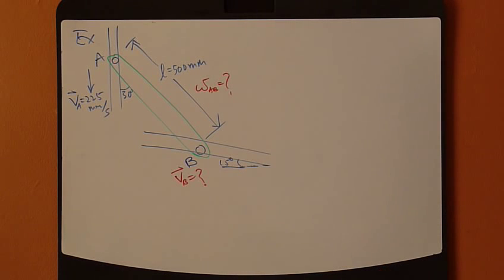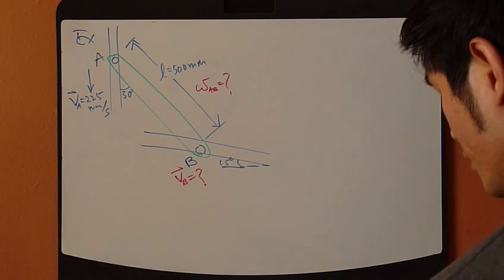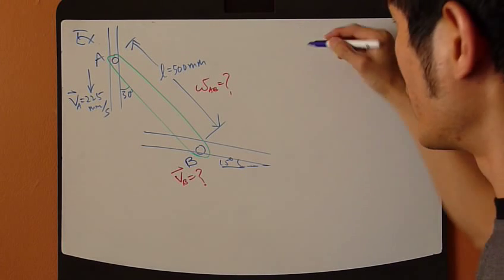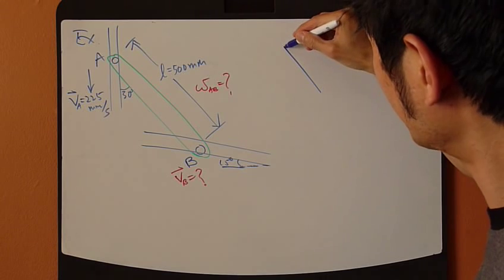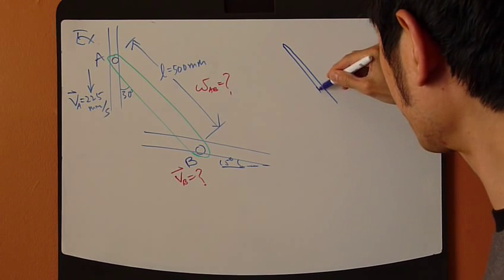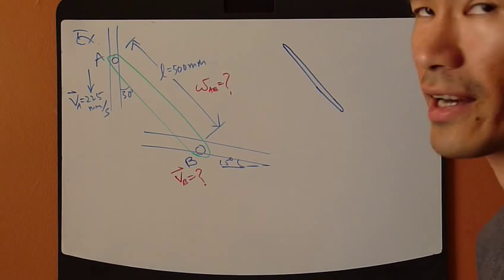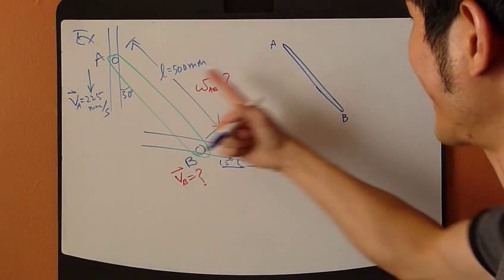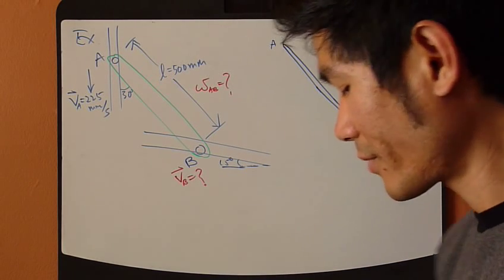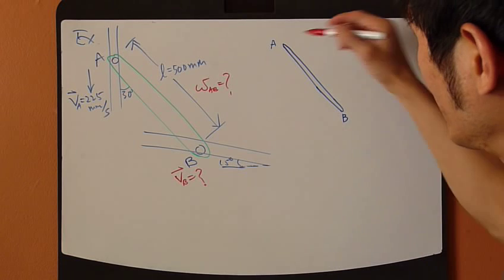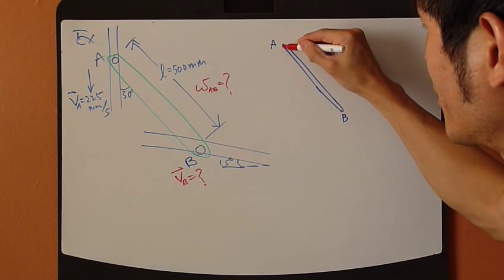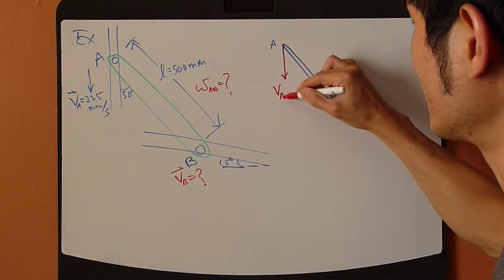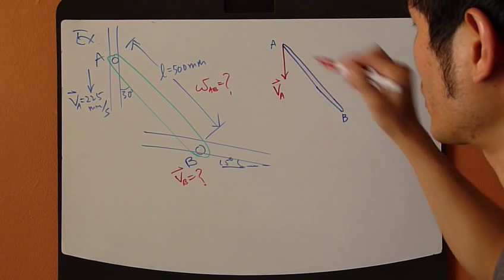I'm going to use the instantaneous center method to solve this problem. What you do is you draw the rigid body at this instant, so exactly like this. Then, you draw the velocities at A and B. So VA, you know exactly it's going straight down. It's going straight down like this.